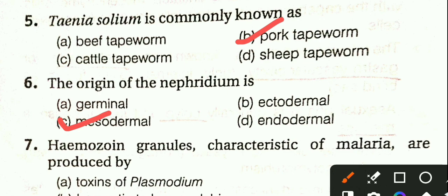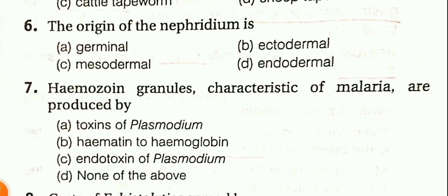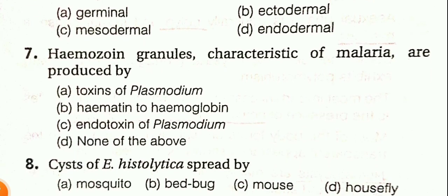Hemoglobin granules characteristic of malaria are produced by: toxin of Plasmodium, haematin, haemoglobin, endotoxin of Plasmodium, or none of these. The answer is haematin, derived from haemoglobin.